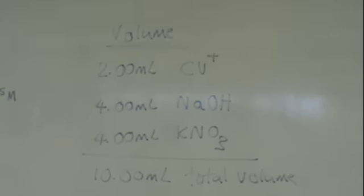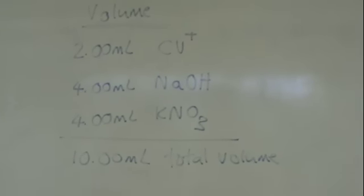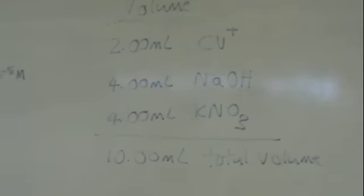Here we're showing you how we obtain the total volume. So we have 2 mLs of crystal violet, 4 of sodium hydroxide, and 4 of KNO3, giving 10 total.